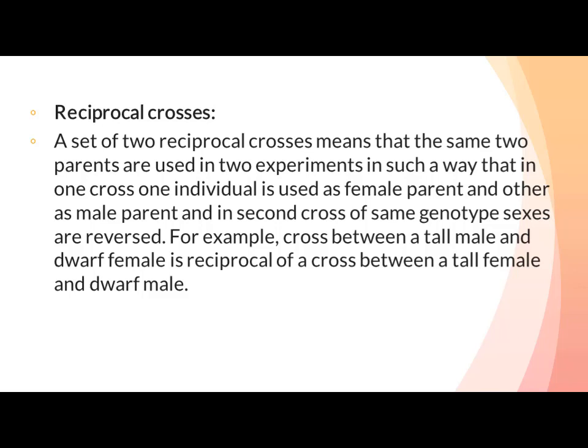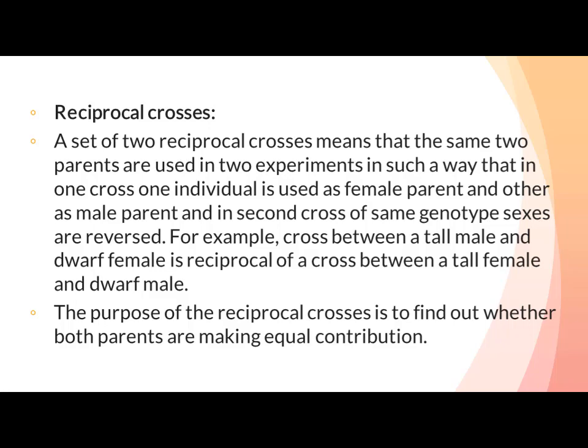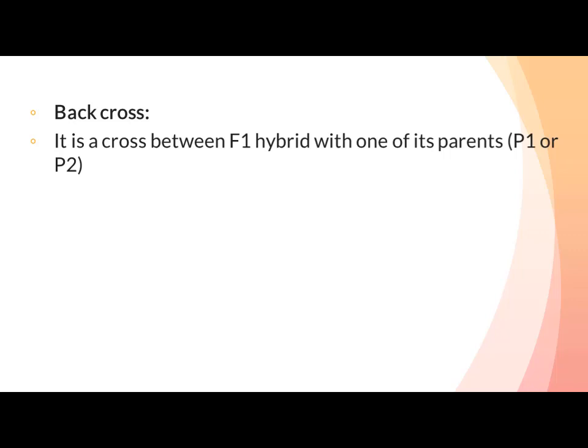Reciprocal Crosses: A set of two reciprocal crosses means the same two parents are used in two experiments — in one cross, one individual is used as female parent and the other as male, and in the second cross the sexes are reversed. For example, a cross between a tall male and dwarf female is the reciprocal of a cross between a tall female and dwarf male. The purpose is to find out whether both parents are making equal contribution.